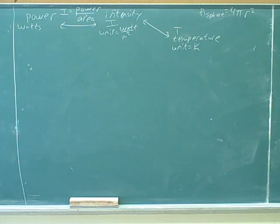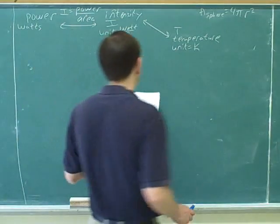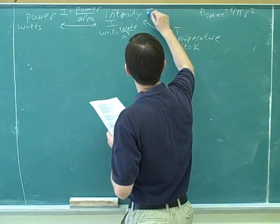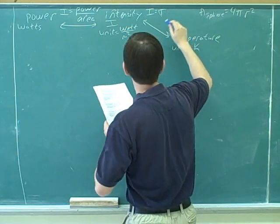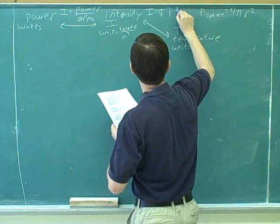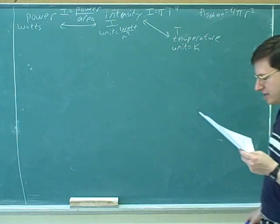So they actually gave you a whole bunch of initial information here on this problem. They told us that the intensity is equal to σ times T to the 4th. Sigma times T to the 4th.